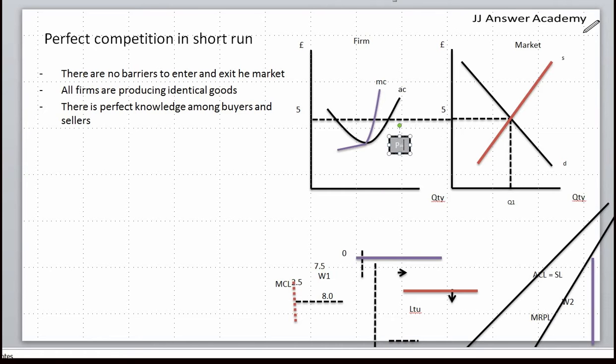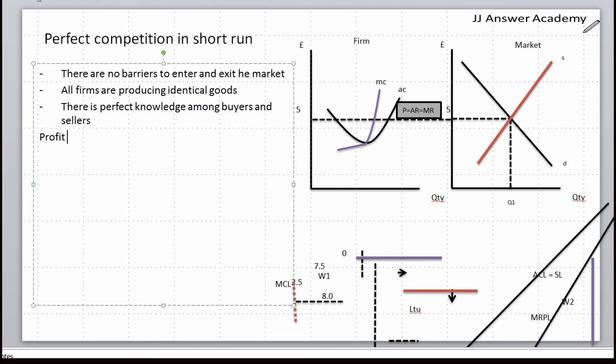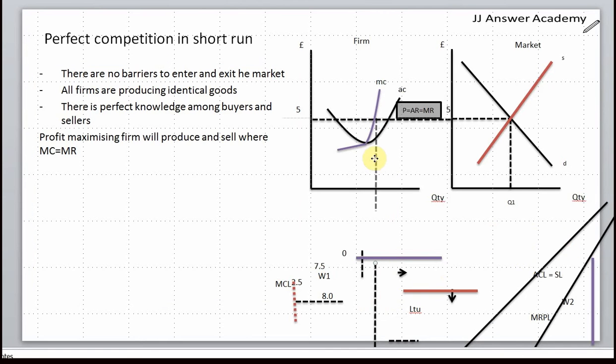We know a profit maximizing firm will produce and sell where MC equals MR, which is the point where the MC curve intersects the MR curve. So the firm is selling 100 units at that point.